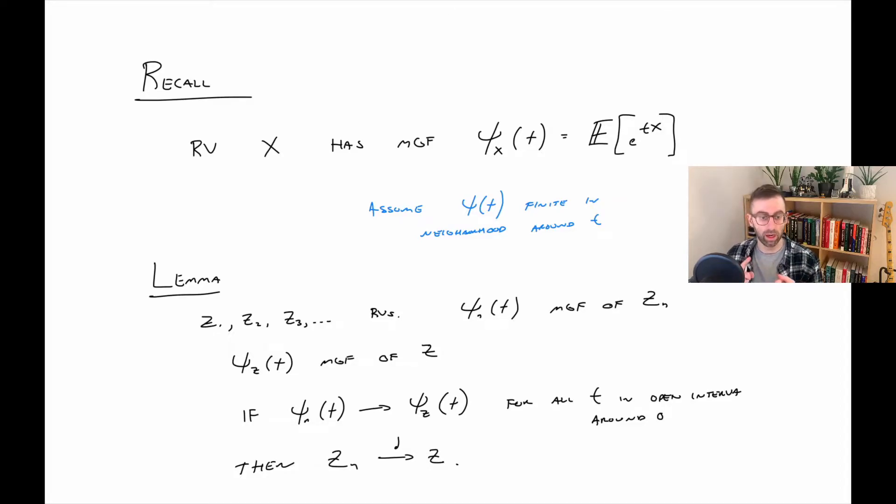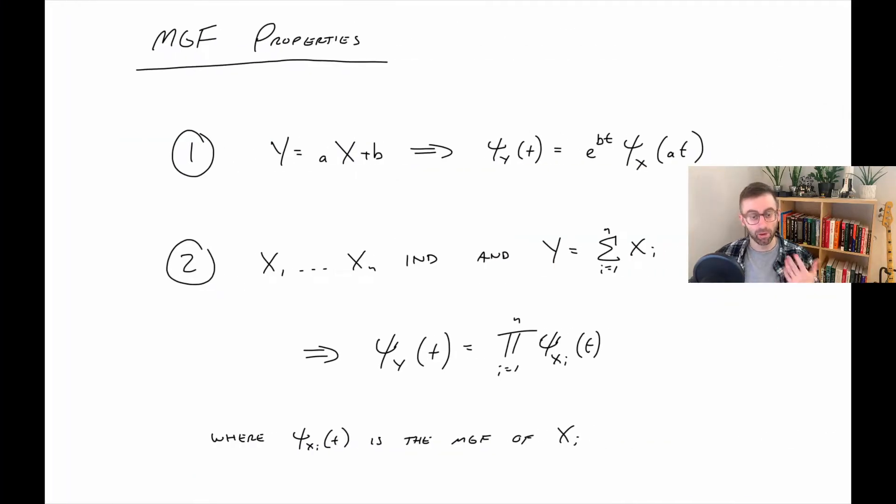So a few things we're going to need along the way. First, the notion of a moment generating function. Next, we have this lemma that tells us if we have random variables z1 through zn with moment generating functions indexed by n, and those moment generating functions converge to the moment generating function of this other random variable z, well then that sequence converges in distribution to z. That will be useful.